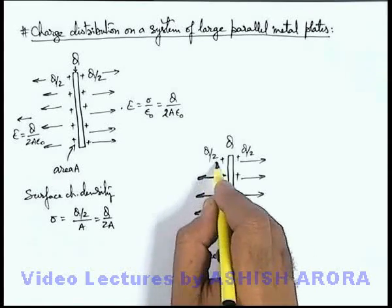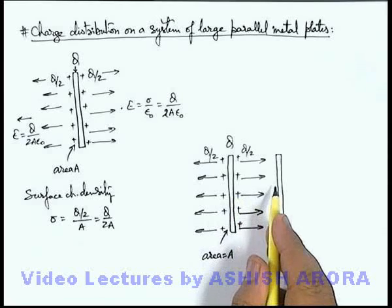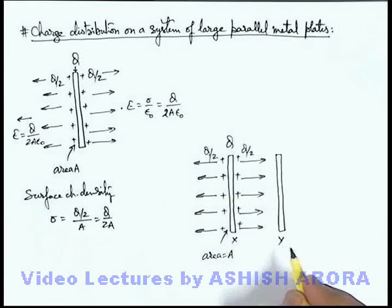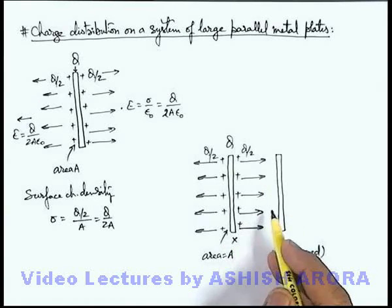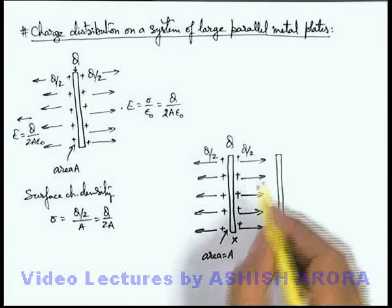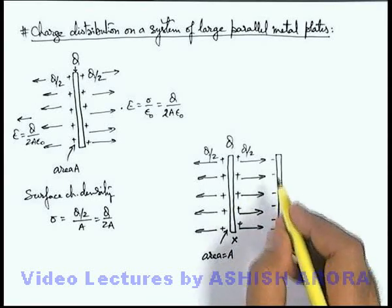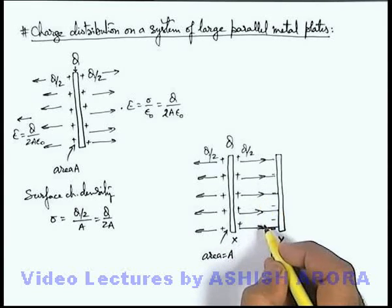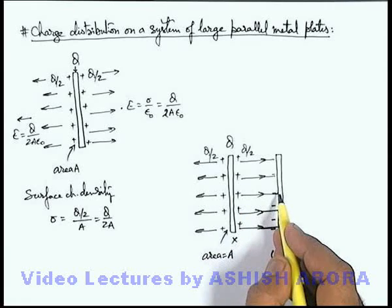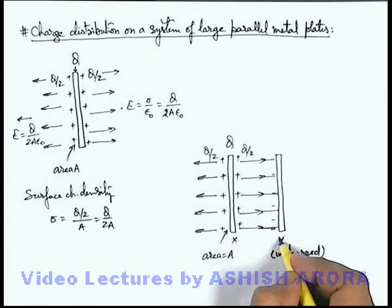Now consider a situation where an uncharged large metal plate Y is kept in front of charged plate X, parallel to it. Since no electric lines can penetrate a metal body, due to the positive charge on plate X, negative charges are induced on the front face of plate Y — the face facing plate X — on which the electric lines will start terminating. As the plates are very large, the whole electric flux originated from the facing face of plate X terminates onto the front face of plate Y.